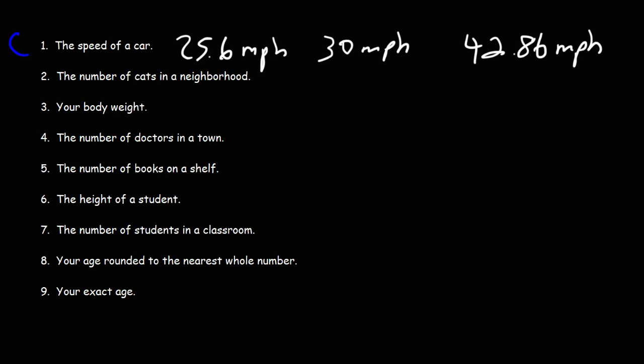Number two: the number of cats in a neighborhood. Can that be measured or counted? You can count the number of cats in a neighborhood - you might count 5 cats, 12, or 18. You can't really have half a cat. This set of data can only have whole numbers, so this would be a discrete set of data.